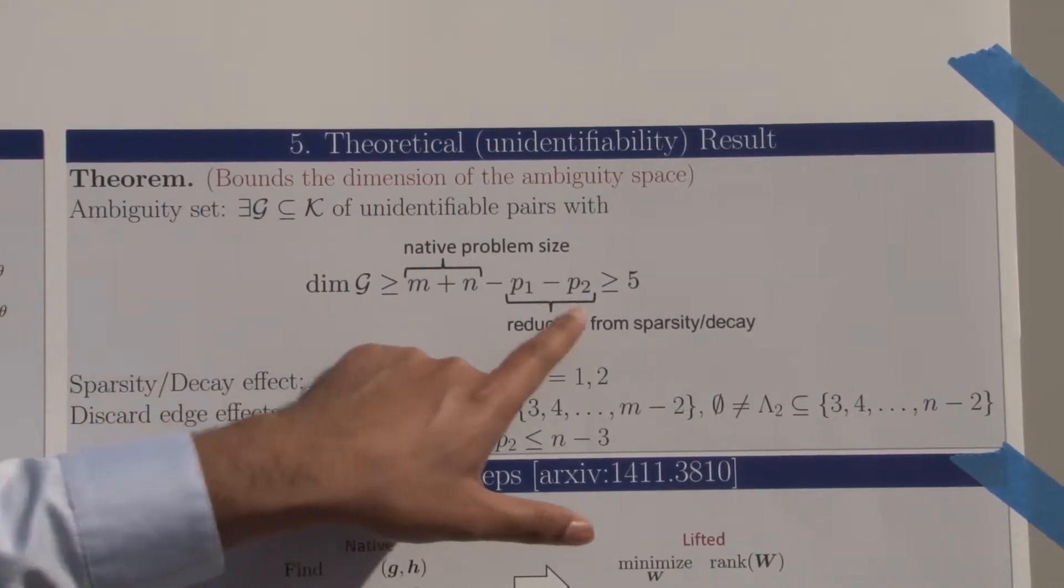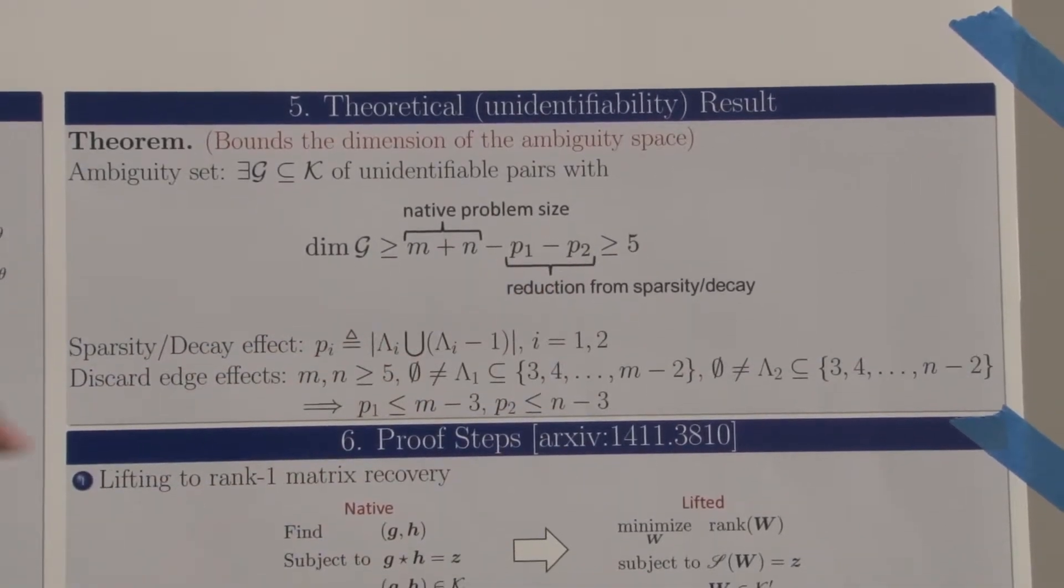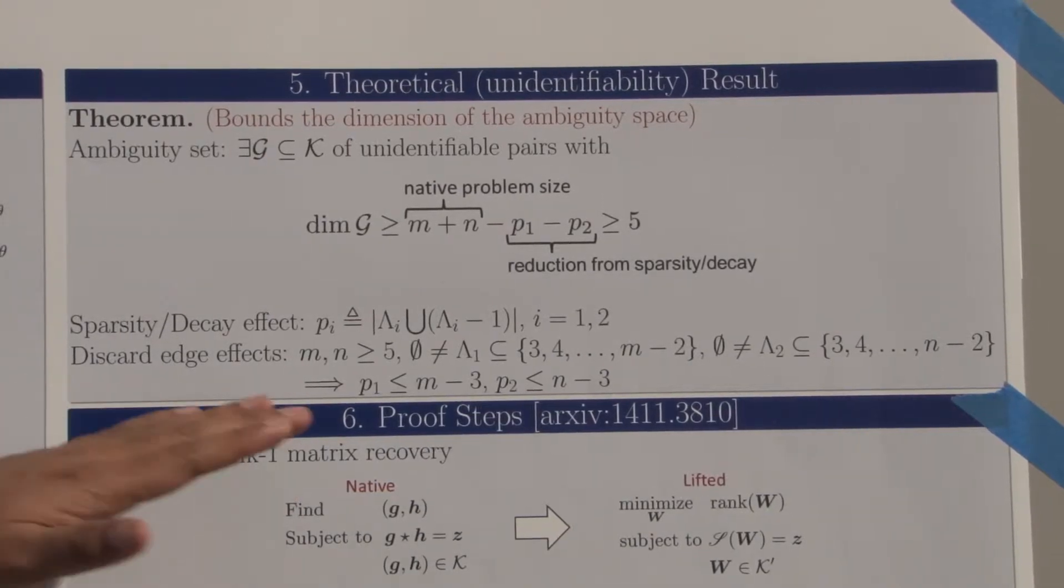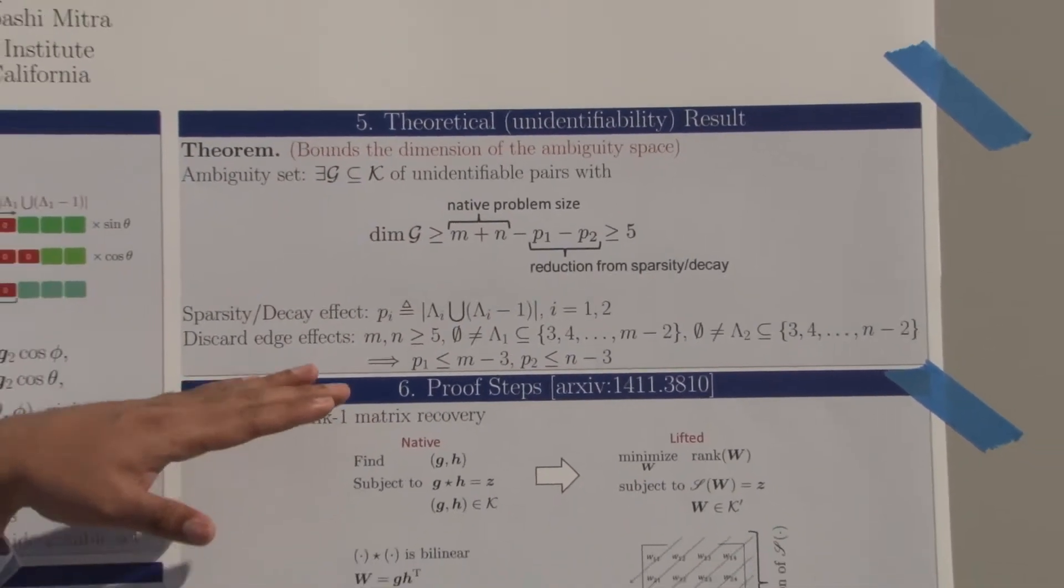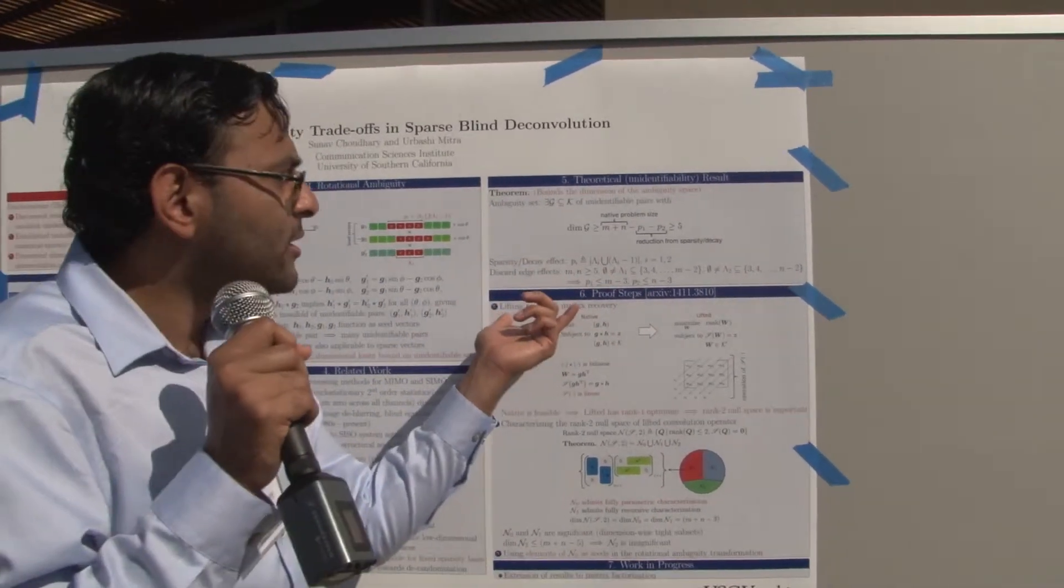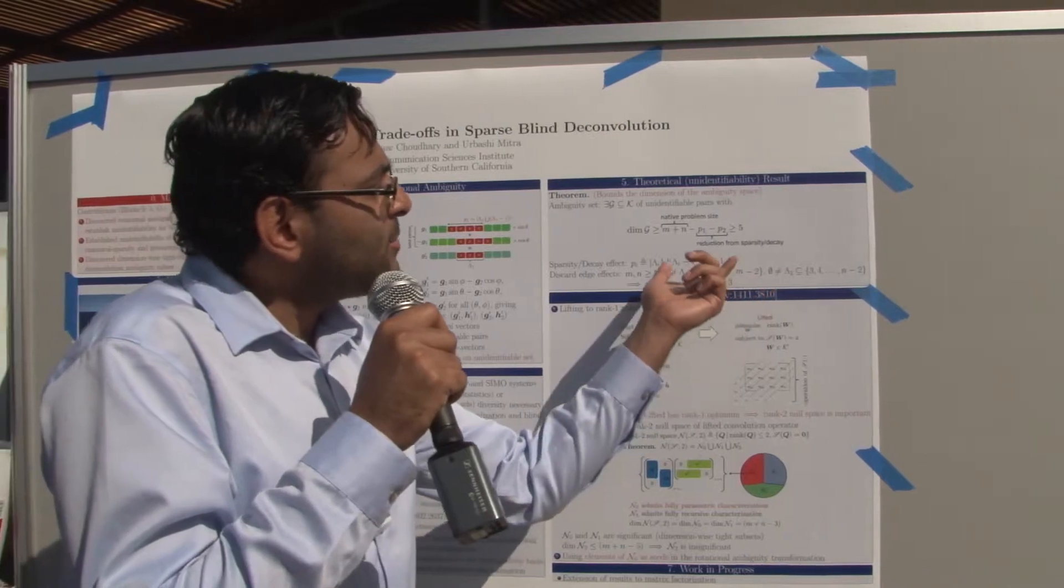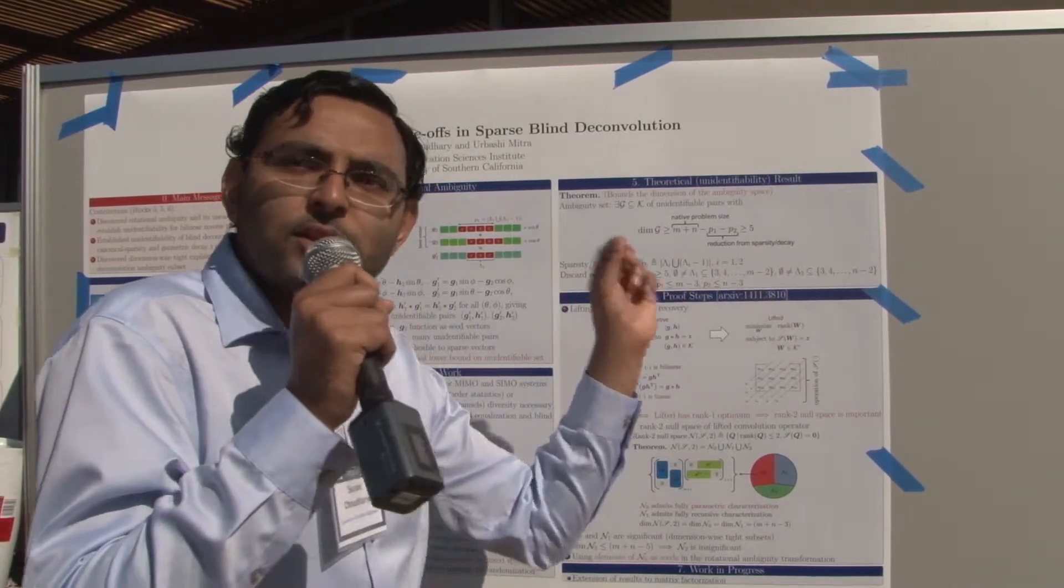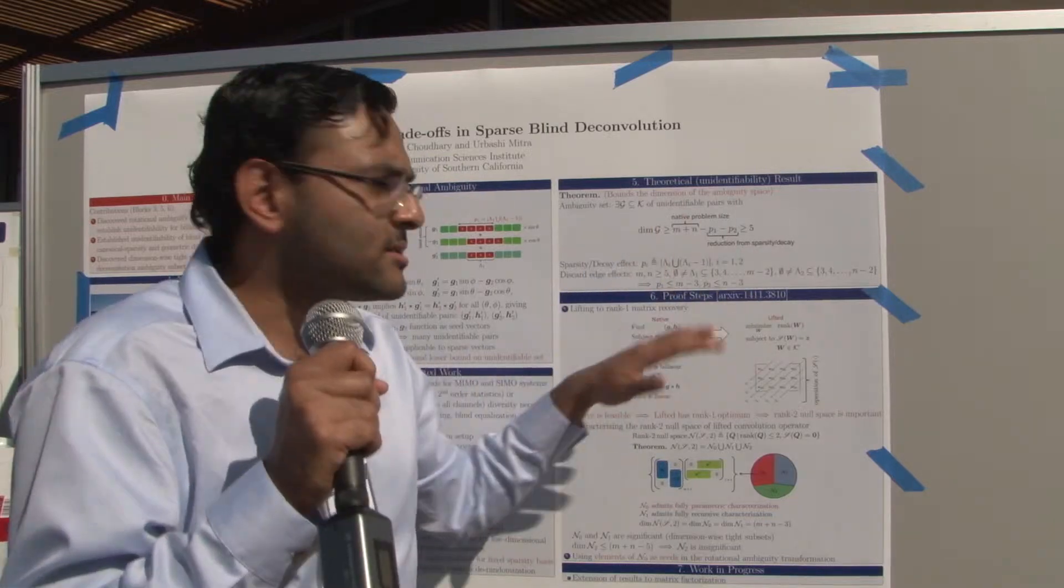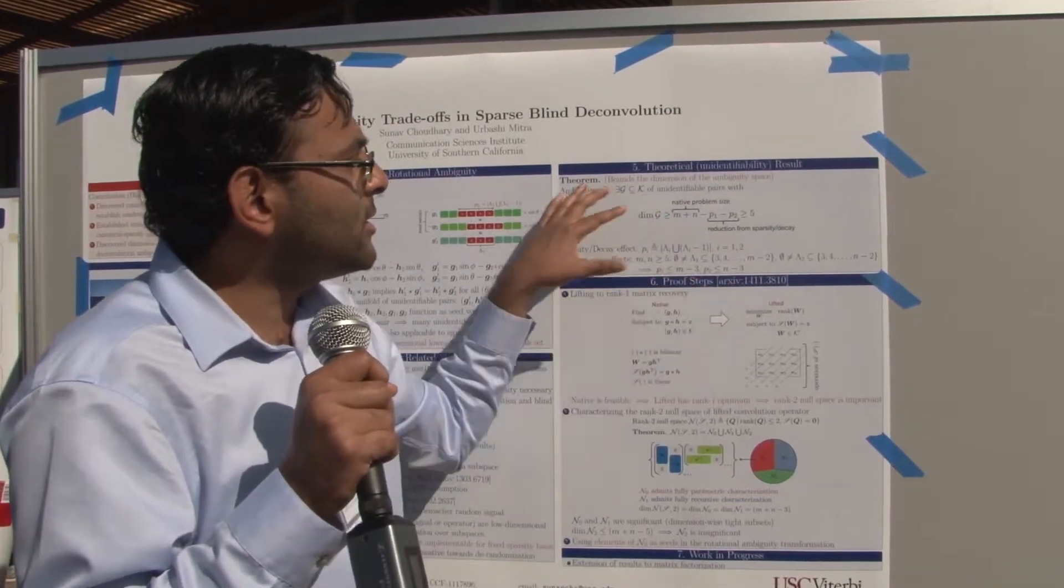The contribution of sparsity comes from these factors P1 and P2, which essentially increase as your sparsity level increases. This result is true if you discard some edge effects—that is, your problem dimensions are larger than five, and the zero support sets exclude the first two indices and last two indices. Under these conditions, you can show that this result holds.